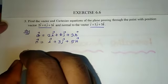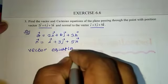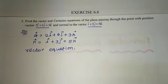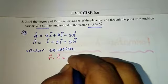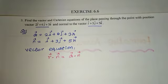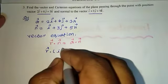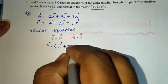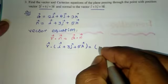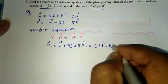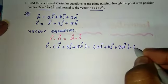Vector equation and Cartesian equation. For the vector equation, we know: r⃗ · n⃗ = a⃗ · n⃗. So, r⃗ · (î + 3ĵ + 5k̂) = (2î + 6ĵ + 3k̂) · (î + 3ĵ + 5k̂).